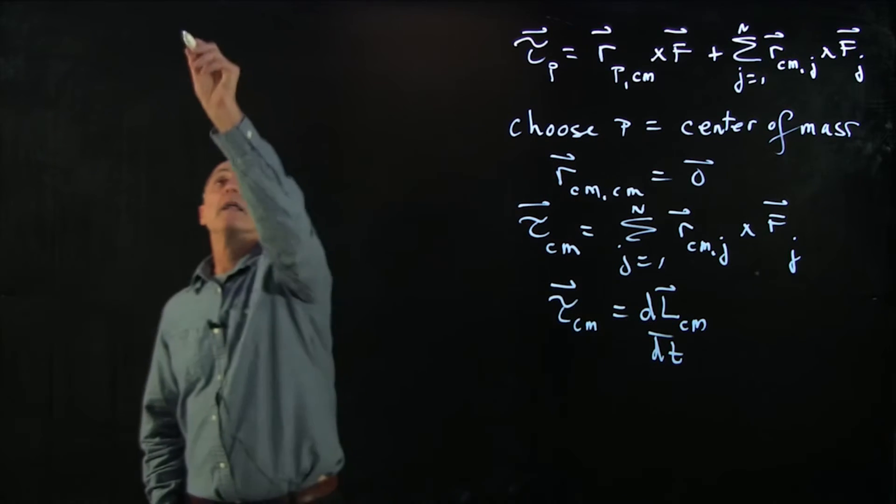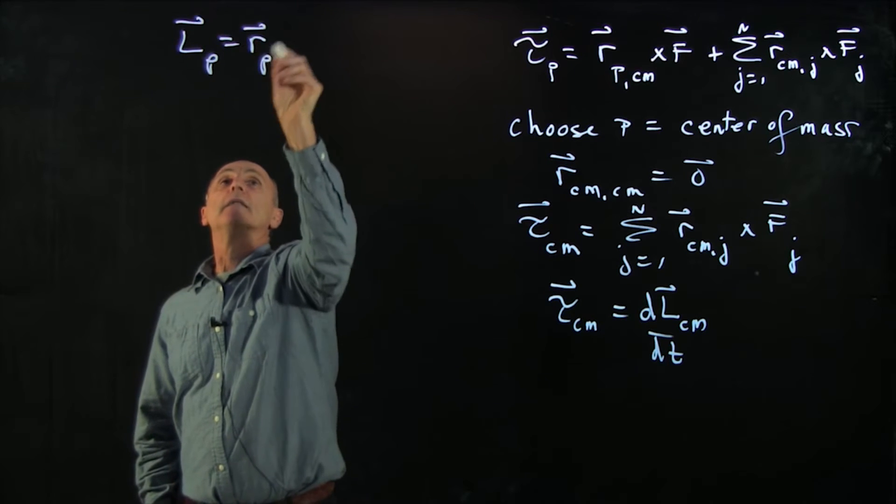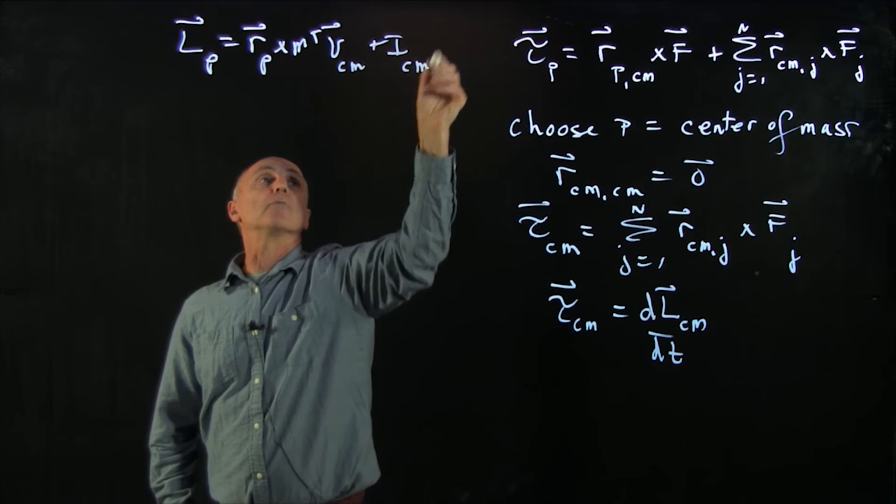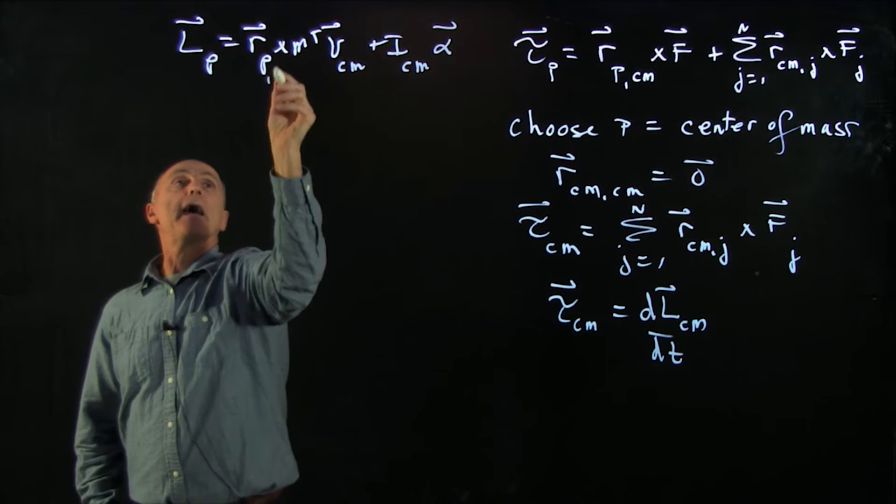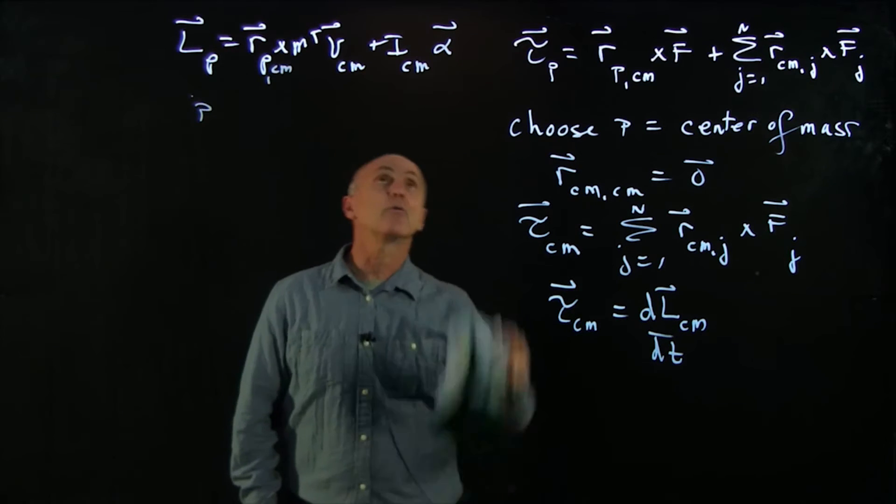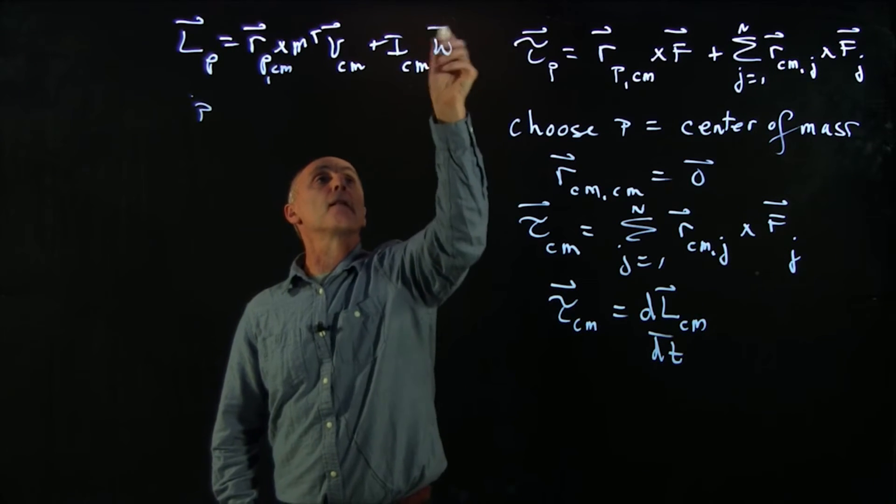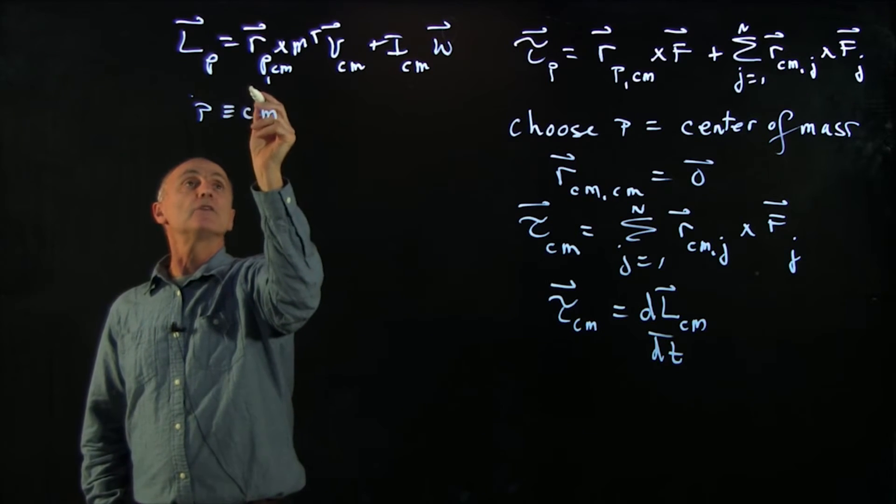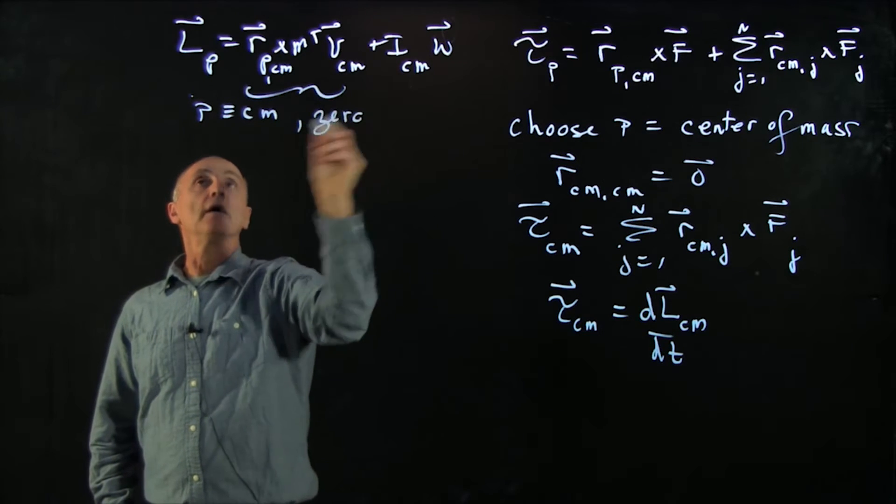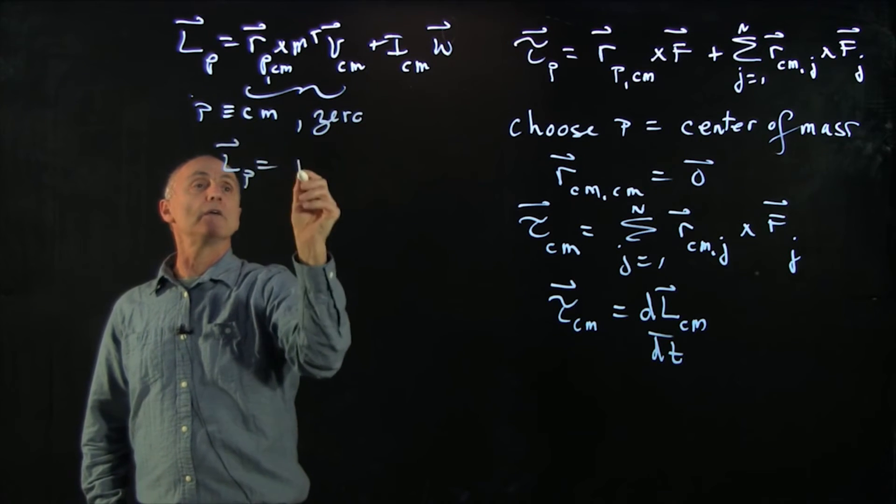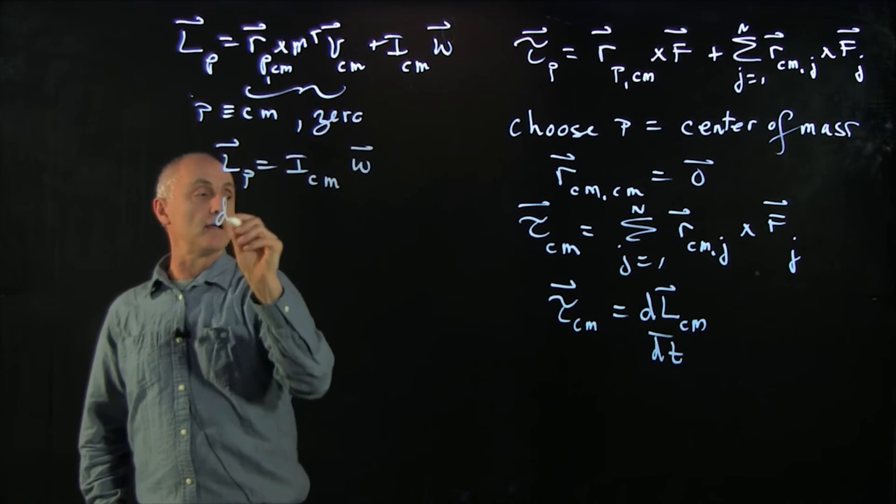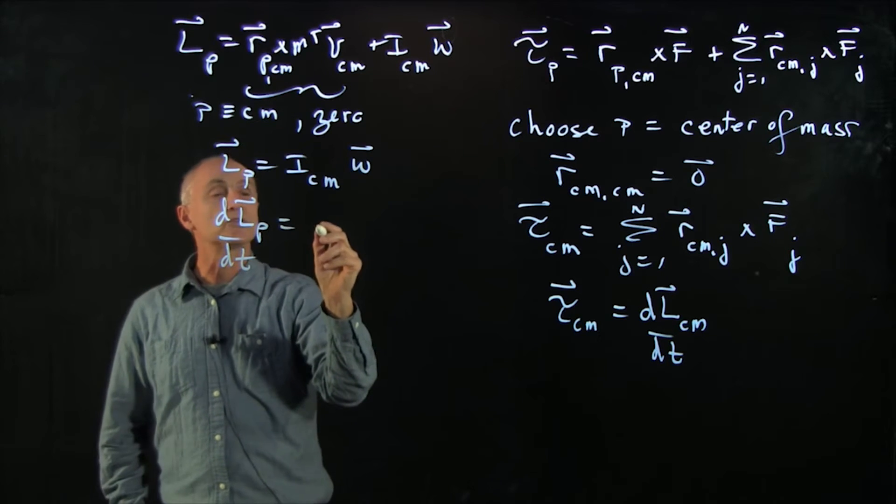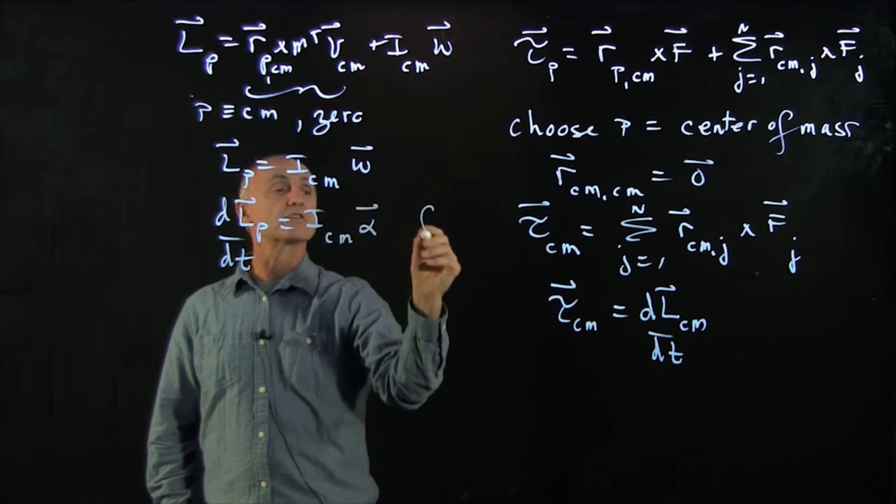We saw before that if we thought of L_p again as a translational and a rotational angular momentum, and the point p was equal to the center of mass, then this first piece would be 0. And L about p is only I_CM omega and dL_p/dt is equal to I_CM alpha for fixed axis.